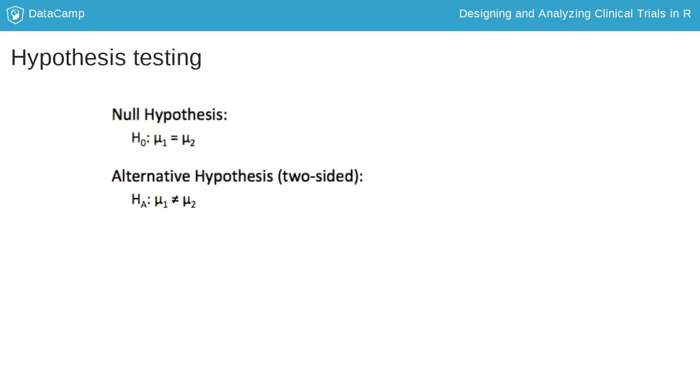The alternative hypothesis could be that the group means are not equal. In this case, we allow for the possibility that the mean change in the active drug group could be higher or lower than in the placebo group, a two-sided test.